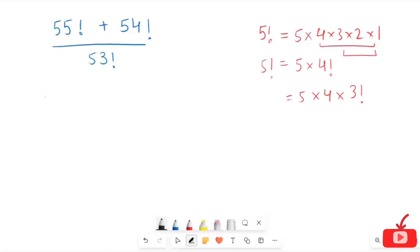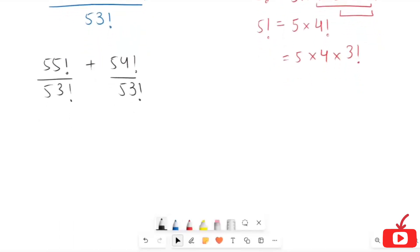So here I'm going to write the above equation in this form: 55 factorial plus 54 factorial over 53 factorial. Now how I'm going to write the factorial of 55 and 54?